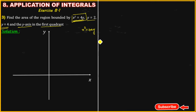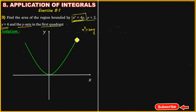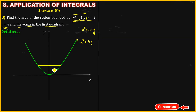Consider the x and y-axis graph. The curve is open upward — this is the equation x squared equals 4y, which is an upward-opening parabola. Next, the line y equals 2 is drawn on the graph, and the line y equals 4 is also drawn on the graph.